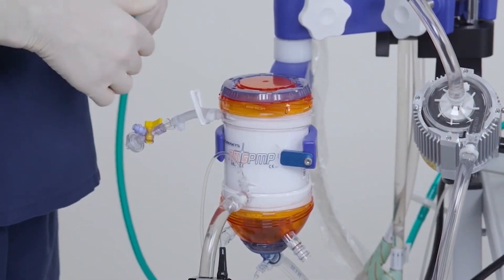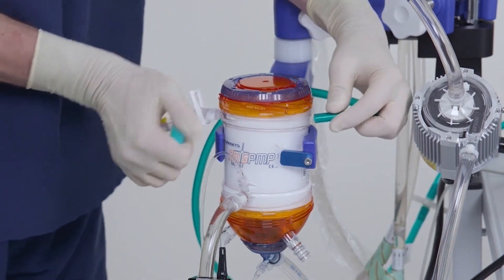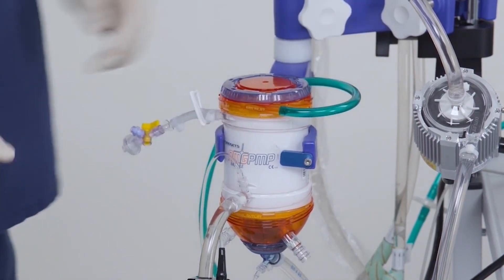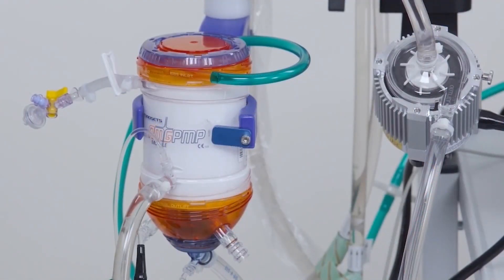Connect the green gas line to the oxygenator gas inlet connector. This line will provide the gas supply to the oxygenator. The circuit is primed and ready for use.